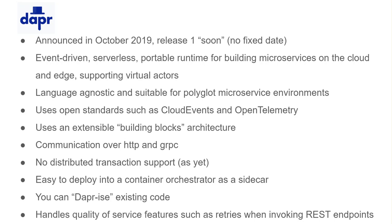Because DAPR is quite new, it currently doesn't support distributed transactions, but that may be something introduced in the future. DAPR itself is deployed as a sidecar using the sidecar pattern, and you can DAPR-ise existing code. Because it runs as a sidecar it's effectively transparent to your application, so you can add it on top of an existing application with a small amount of refactoring. DAPR also handles quality of service features such as retries, so if a microservice fails or is unavailable it will handle retries until that service is available.